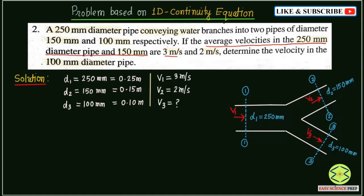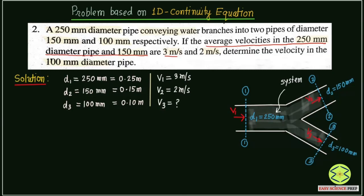To find the velocity of the fluid at section 3-3 in the 100 mm diameter pipe, we use the continuity equation. Here, fluid is entering from section 1-1 but leaving from section 2-2 and section 3-3. For conservation of mass, we treat this junction as a system. The volume of fluid entering from section 1-1 equals the volume leaving from sections 2-2 and 3-3. So the discharge across section 1 equals the sum of discharges across sections 2 and 3.